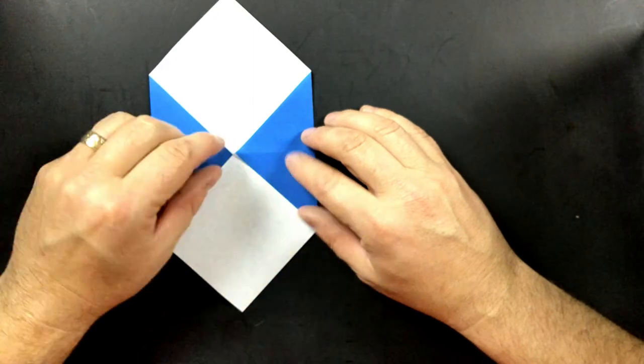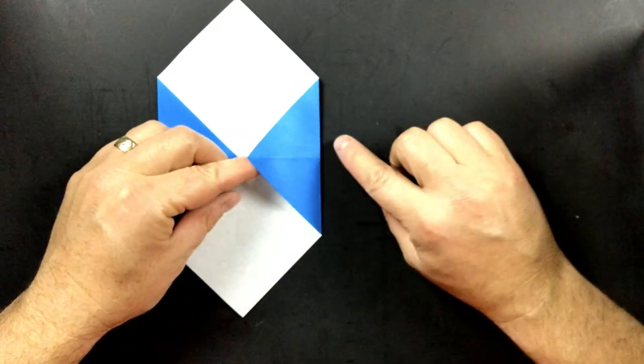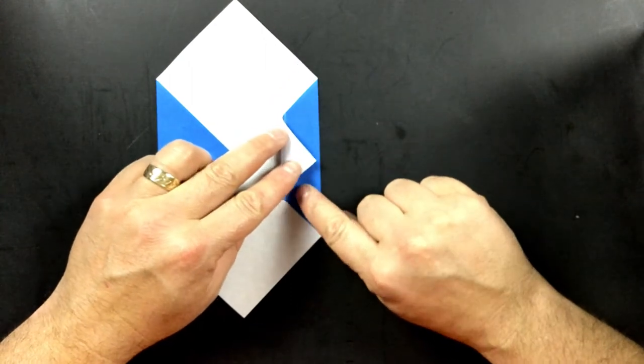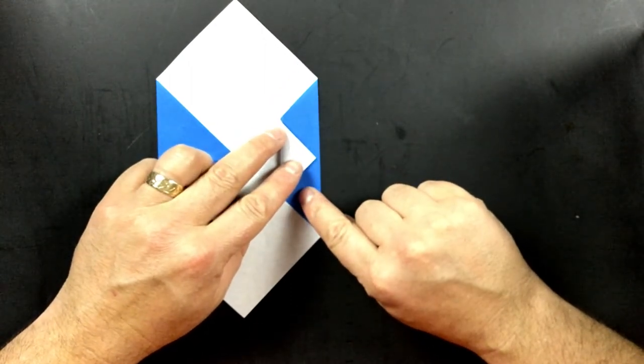This side right here is going to be the tail. And it's got to go beyond this fold. If I shorten it or don't go far enough, I'm not going to have a tail.